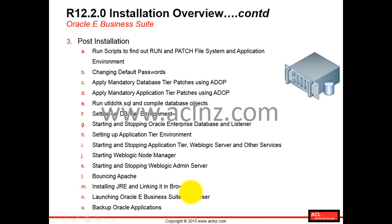Then we'll move on to installing the JRE and linking it in the browser. Your server setup is done — now it's time for the client side. We'll install Oracle JRE on the front end and configure client settings to access the application via a browser, then launch Oracle E-Business Suite in the browser. Optionally, we'll also back up Oracle Applications.